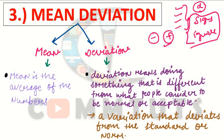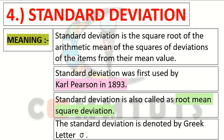Because of the limitations of these three methods, a new method was introduced — standard deviation. Standard deviation overcame, to a great extent, the limitations of range, quartile deviation, and mean deviation, and it was successful. Standard deviation was first used by Carl Pearson in the year 1893. This can be asked in one-mark questions or viva. This method is also called the root mean square deviation method.